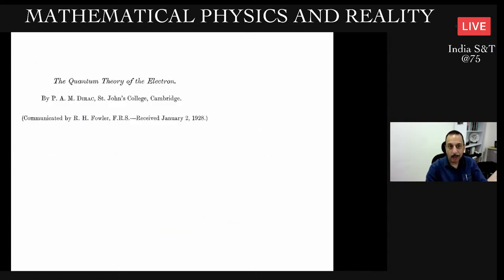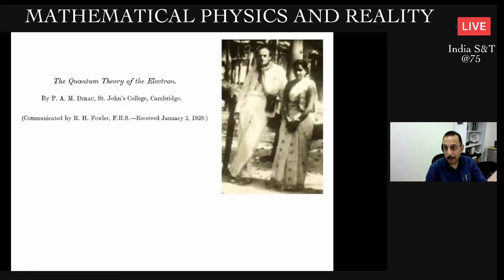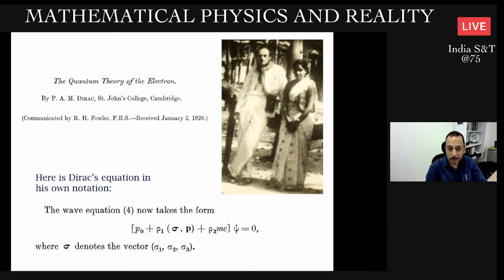In 1928, Dirac proposed a new wave equation compatible with SO(3,1) which should replace Schrodinger's equation in the relativistic domain. This is a screenshot of his paper in 1928. This is a picture of Dirac in India. I believe the person with him is Purnima Sinha, one of the first Indian women to work in modern physics. Here is Dirac's equation in his own notation. It doesn't look much like the Schrodinger equation, but both have momentum and a wave function.